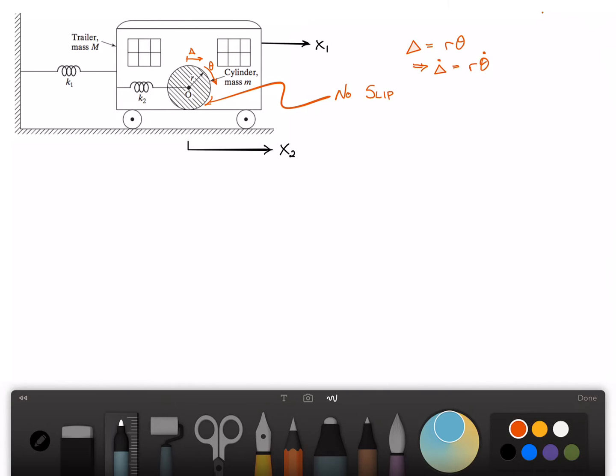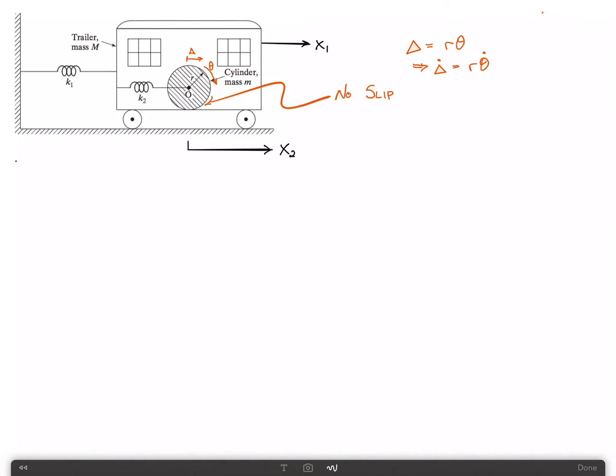All right, so we're going to use Lagrange's equations to solve this, and the first order of business is to set up the kinetic energy. So the kinetic energy, which we'll call T, is equal to the kinetic energy of the cart, which is one-half times big M times x1 dot squared, plus the kinetic energy of the cylinder.